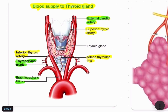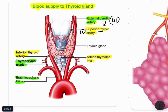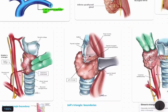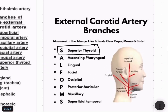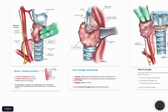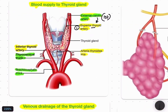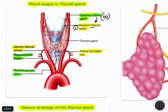For arterial supply, we have two important arteries. Number one is the superior thyroid artery, which is a direct branch of the external carotid artery. The superior thyroid artery is the first branch of the external carotid artery. Remember that branches coming from the carotid artery at the level of the neck are from the external carotid, not from the internal carotid, as the internal carotid does not give any branches at the neck level.